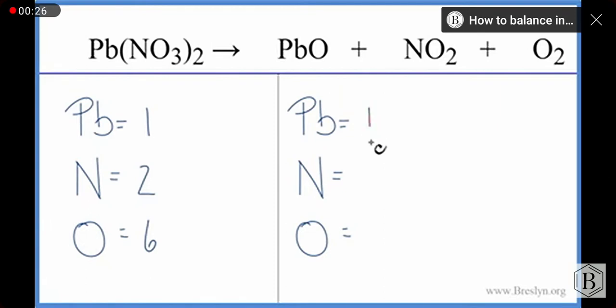On the product side, we have the one lead, the one nitrogen, and then oxygens. We have one plus two, that's three, plus two, three plus two, that's five. So we have five oxygens.